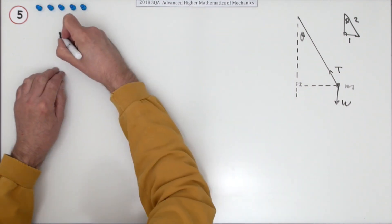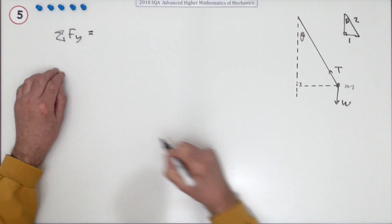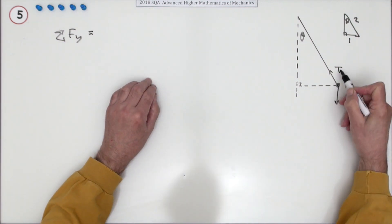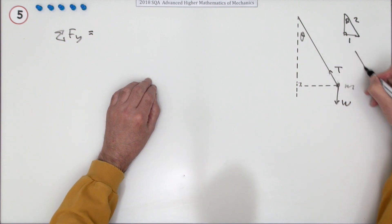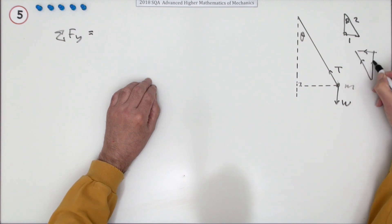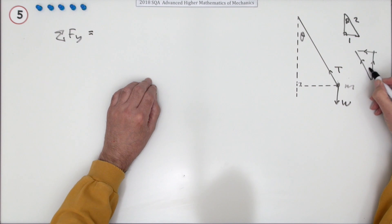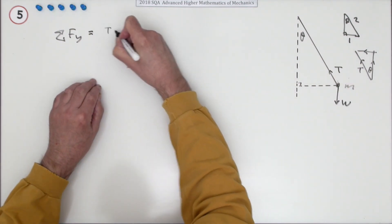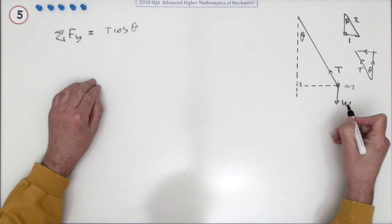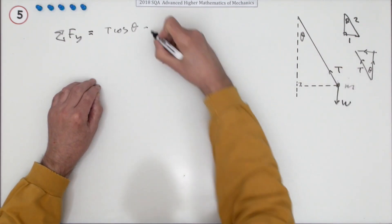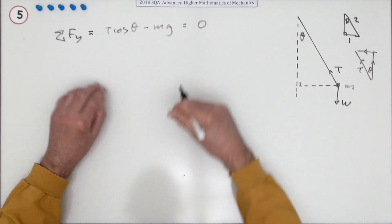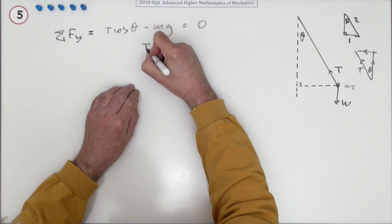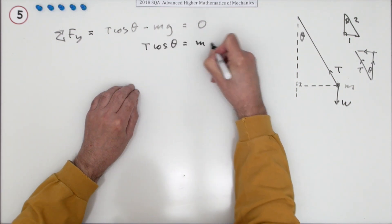What are the forces? The sum of the forces in the y-direction: you've got T, and the component of T upward — drawing the T triangle, there's a component horizontally and a component vertically. By alternate angles, that's theta, so the vertical component next to the angle will be cosine. That gives T cosθ going up, minus mg going down. They're balanced, so they come to zero: T cosθ = mg. That's equation one and the first mark.